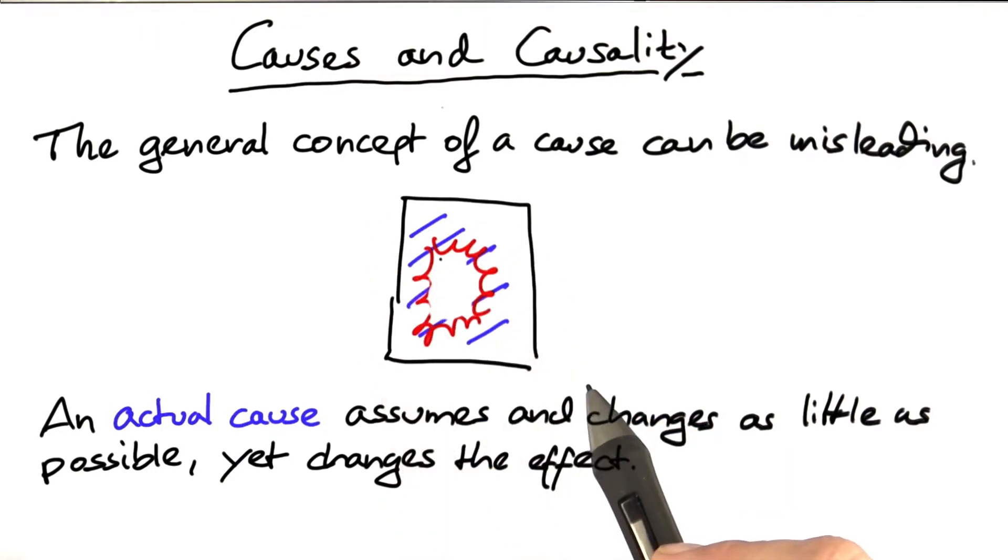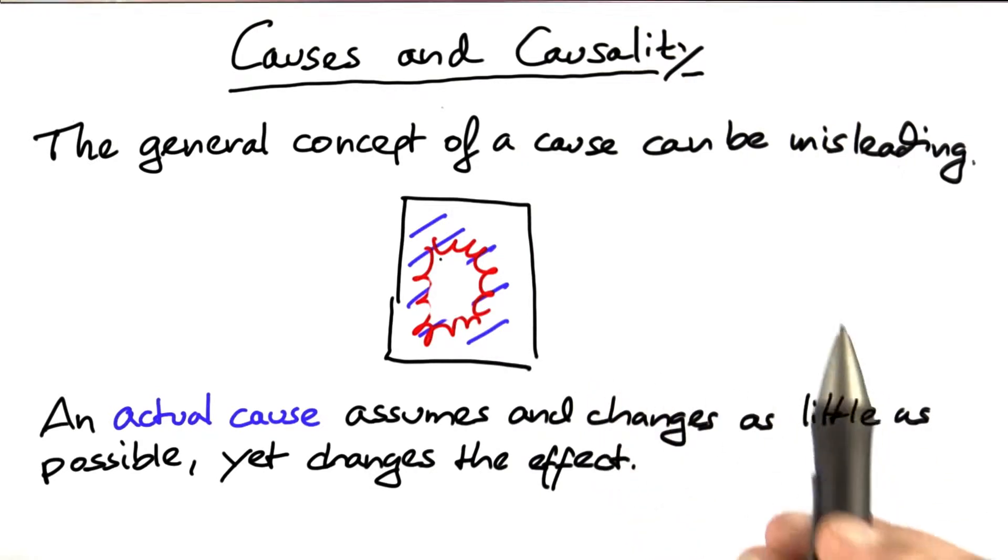It would be cold or hot depending on your climate. If the house maker had not built the house, the change would be even bigger. So what you want is an actual cause that assumes and changes as little as possible, which is precisely what the ball is in here.